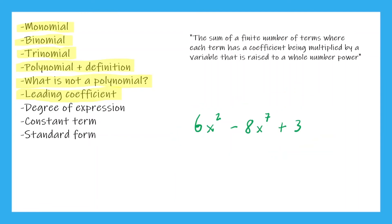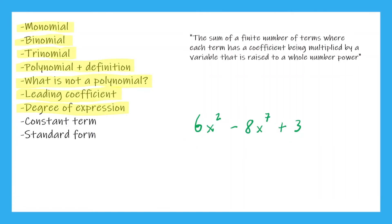Now what is the constant term? Let me highlight degree of expression. The constant term is that number being multiplied by x to the power of zero. Remember there's an implied x to the power of zero next to it, so the constant term is 3. Let's highlight that part.